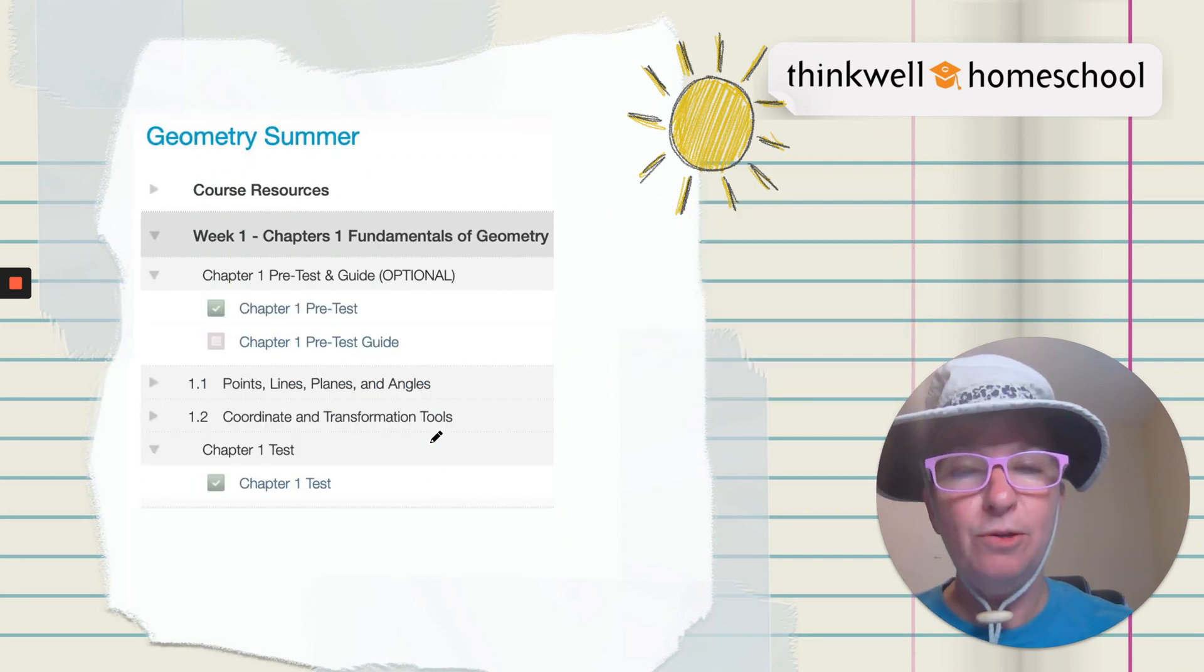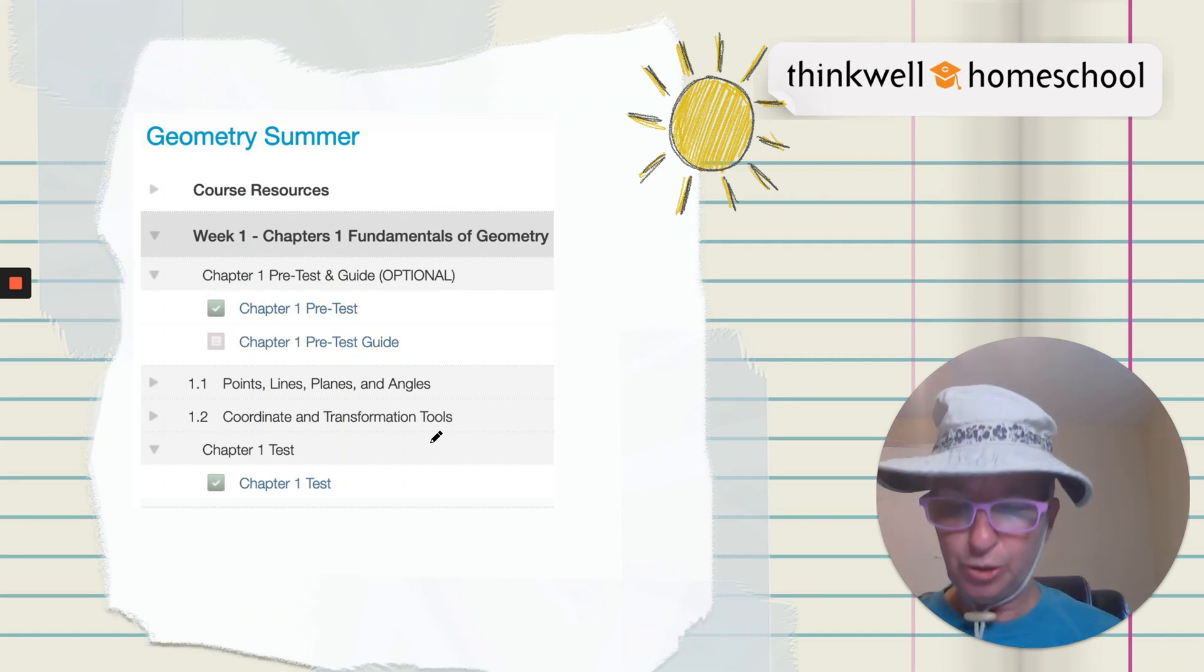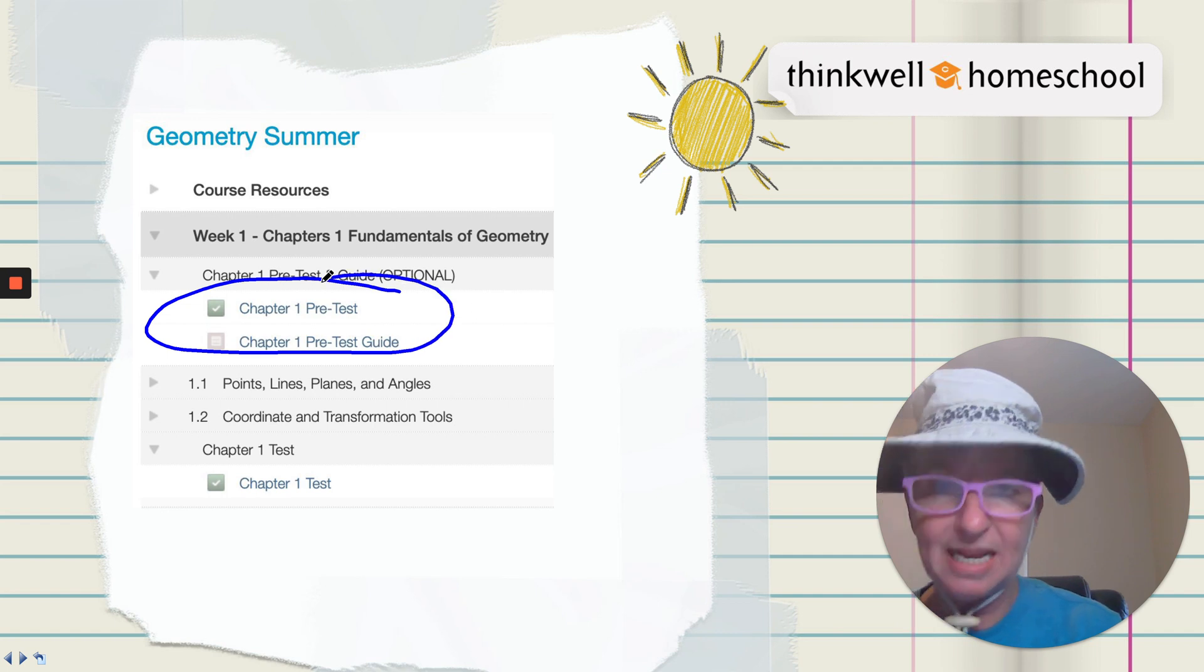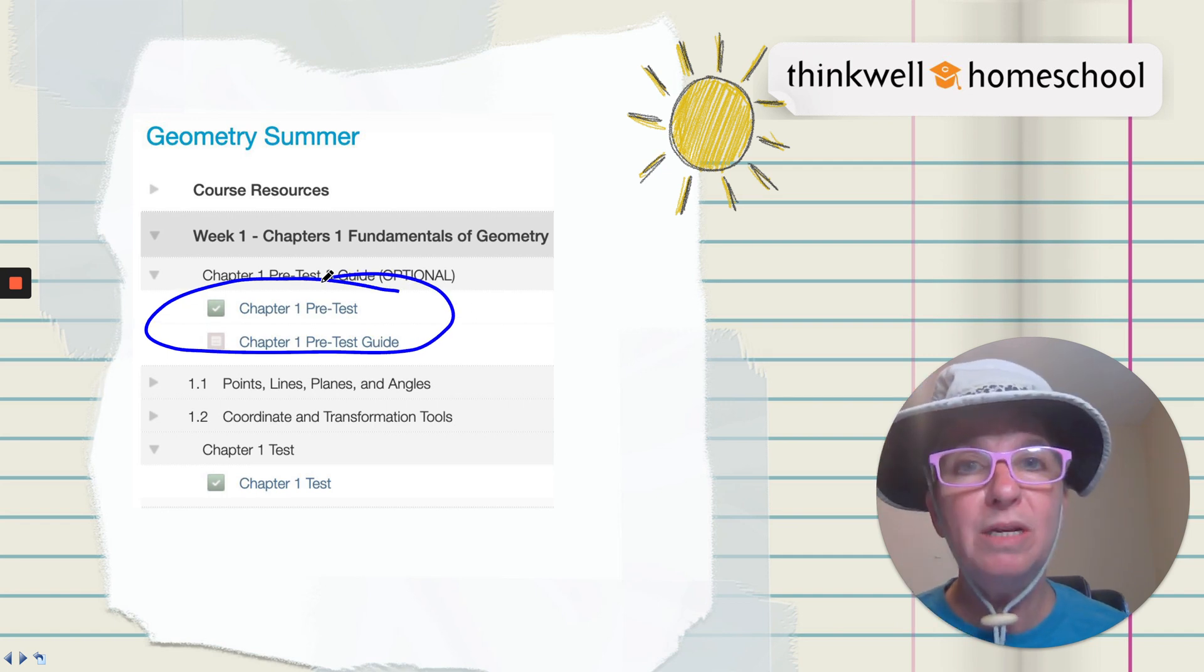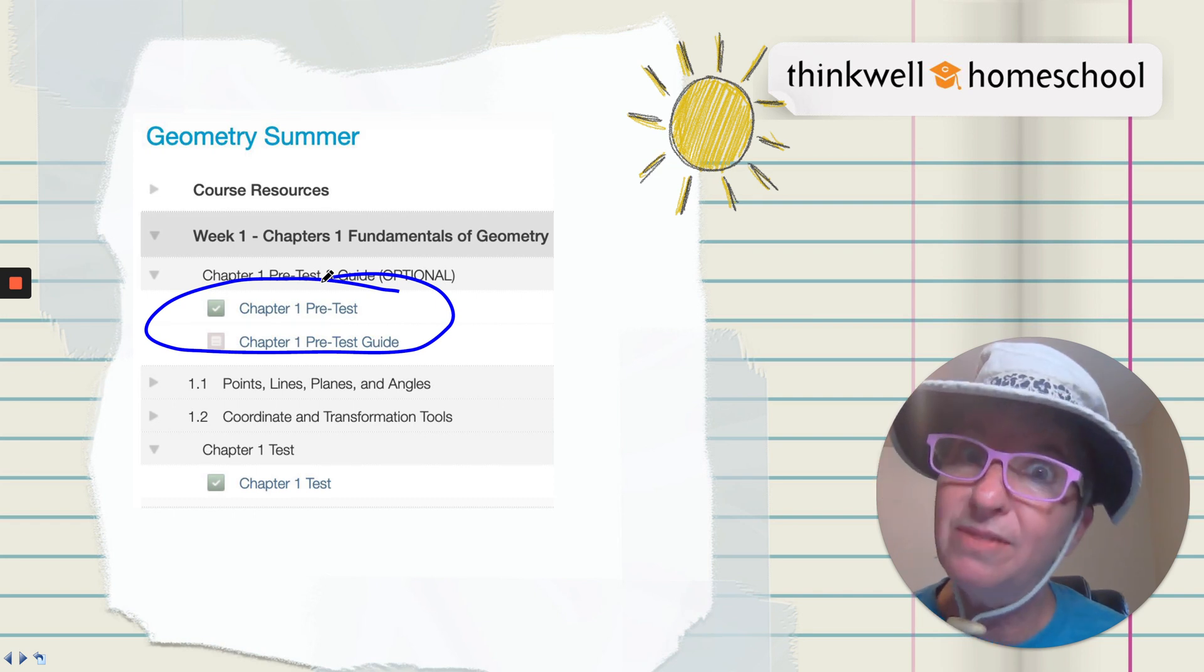What if you're short on time? Every chapter has this option: you take the pre-test, answer all those questions, and then you look at the guide to see which ones you got right. Then you can skip those topics. That could save you a lot of time.